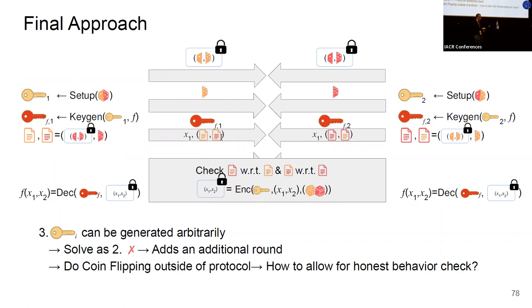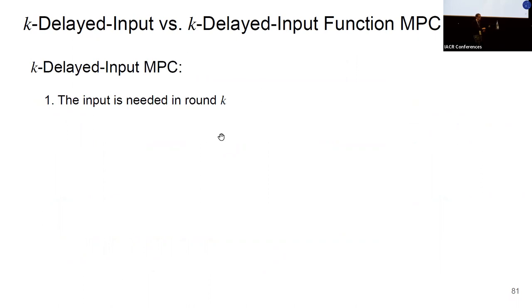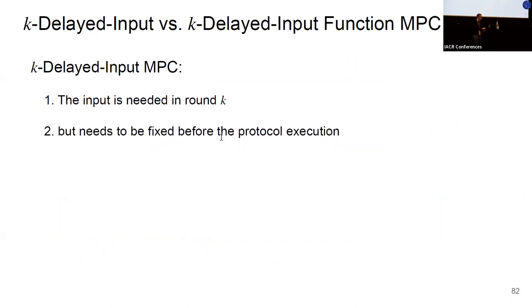There remains one problem: previously the input to the MPC protocol was used in round one, but now we require the input in round three, and additionally it must use information generated outside the MPC protocol. The notion of delayed-input MPC allows for later inputs, but not for this type of security. We need a stronger notion, which we term k-delayed input function MPC. In standard k-delayed input MPC, the input is needed in round k but cannot be adaptively decided — it must be fixed before the protocol starts.